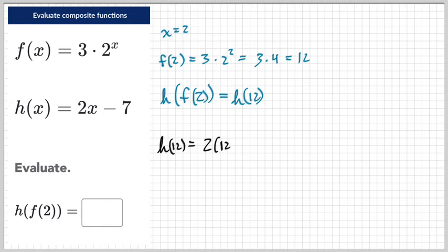2 times 12 with parentheses and such. 2 times 12 is 24. Subtract the 7 and then you're done. That's your answer. So you can say that h of f of 2 equals 17.